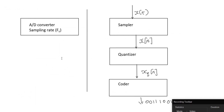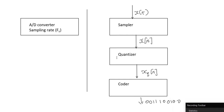Most commercially available A-to-D converters are organized as shown here. The first part is what is known as the sampler, where we go from continuous time signals to a sequence of numbers. Here, x of n — the values of x of n can be any real numbers. However, when you're representing numbers in a digital computer, you have to deal with finite resolution. That means you cannot represent all possible real numbers; you can only represent a certain set of quantized levels.